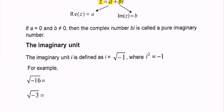The imaginary unit is denoted as i, and is defined as i equals the square root of negative 1, where i squared equals negative 1.